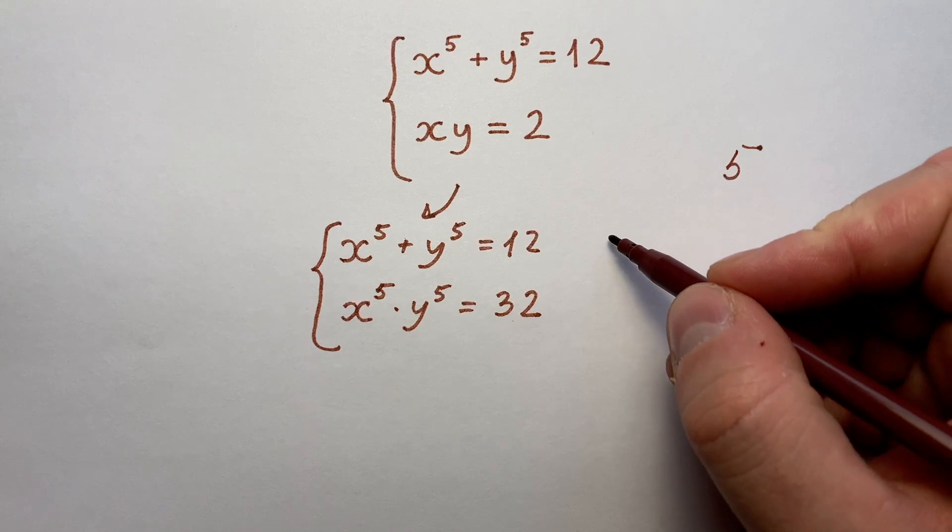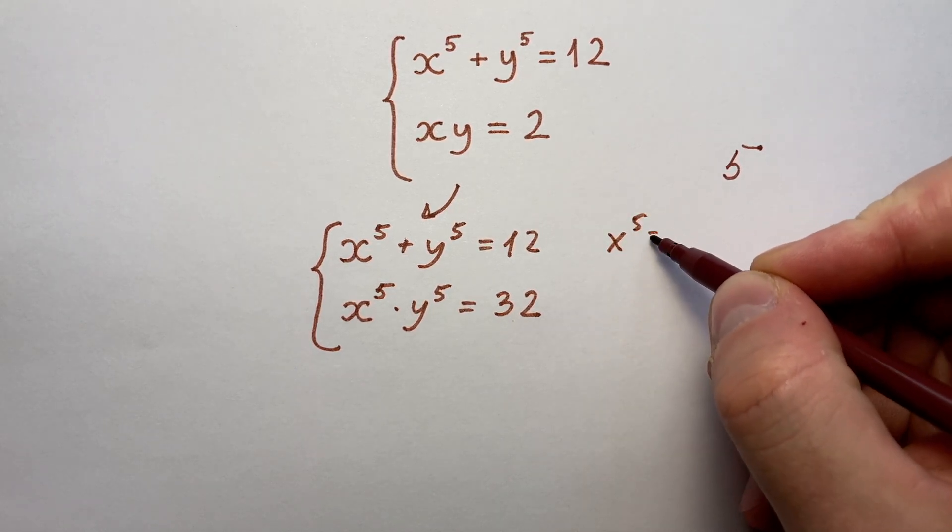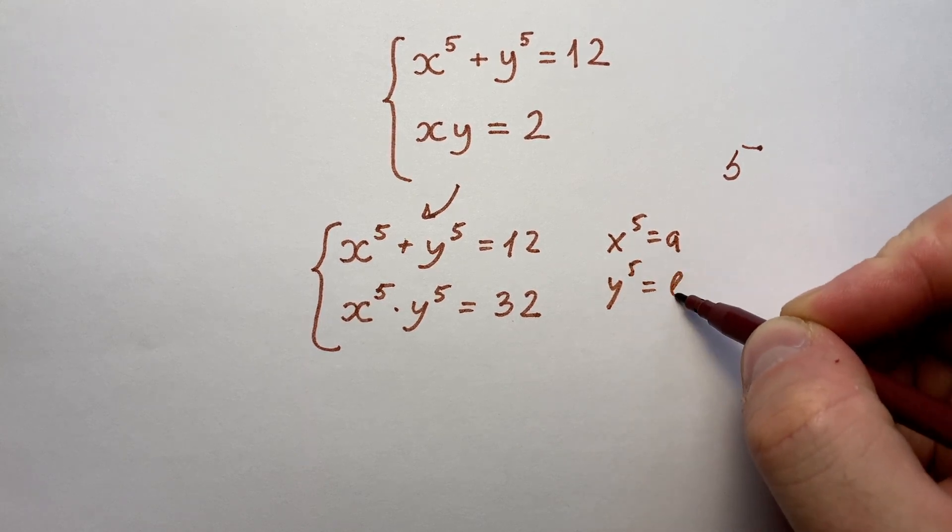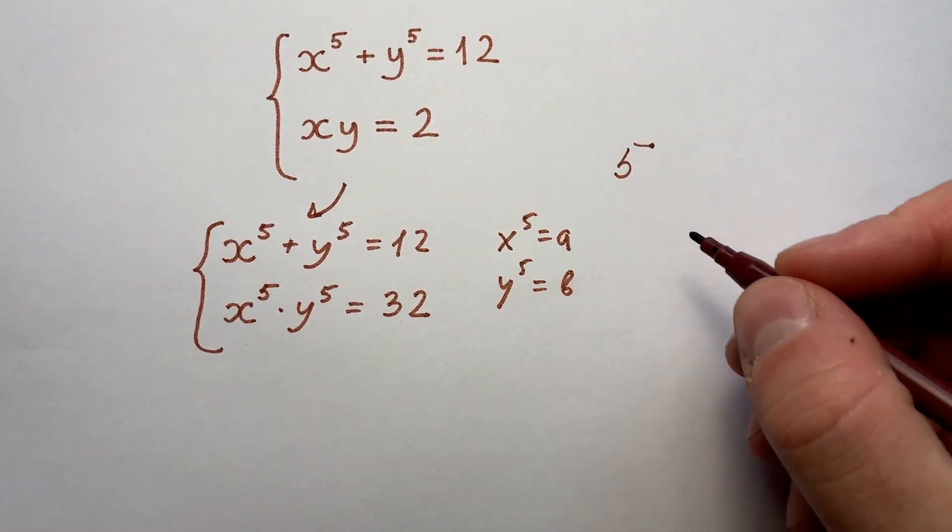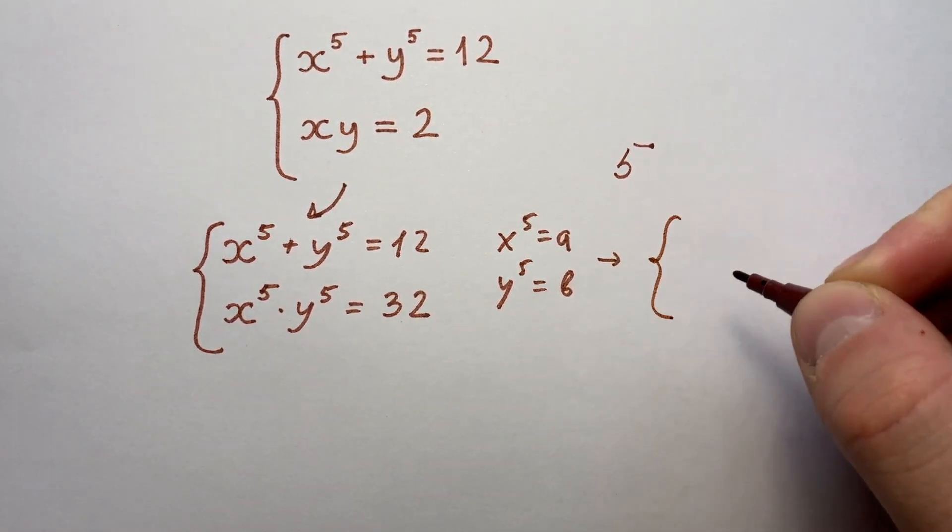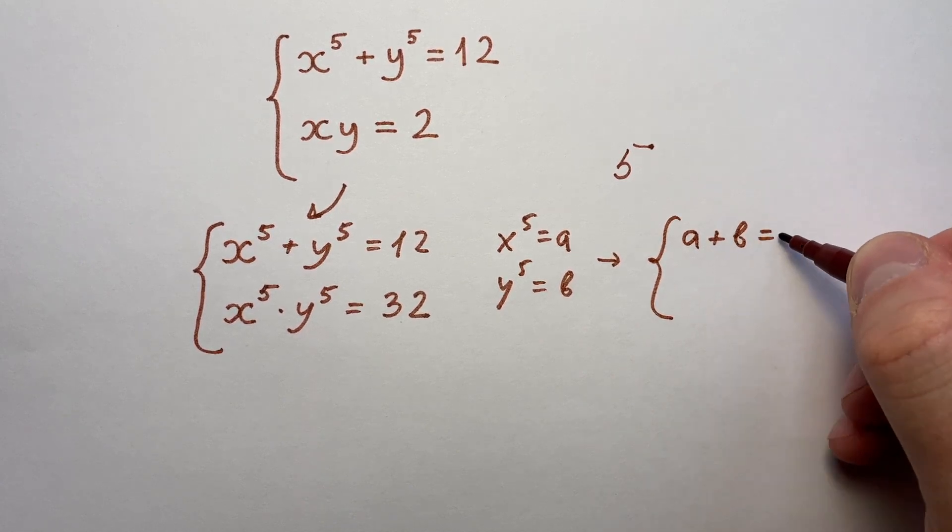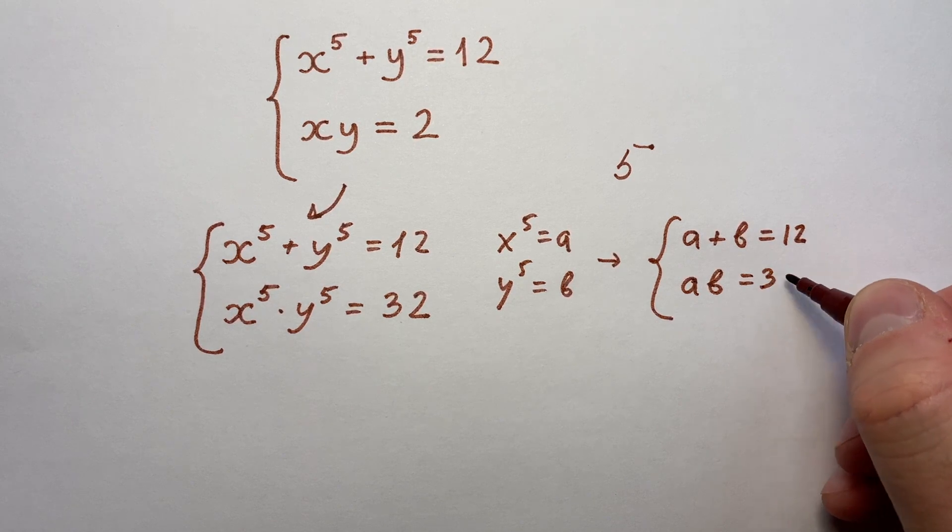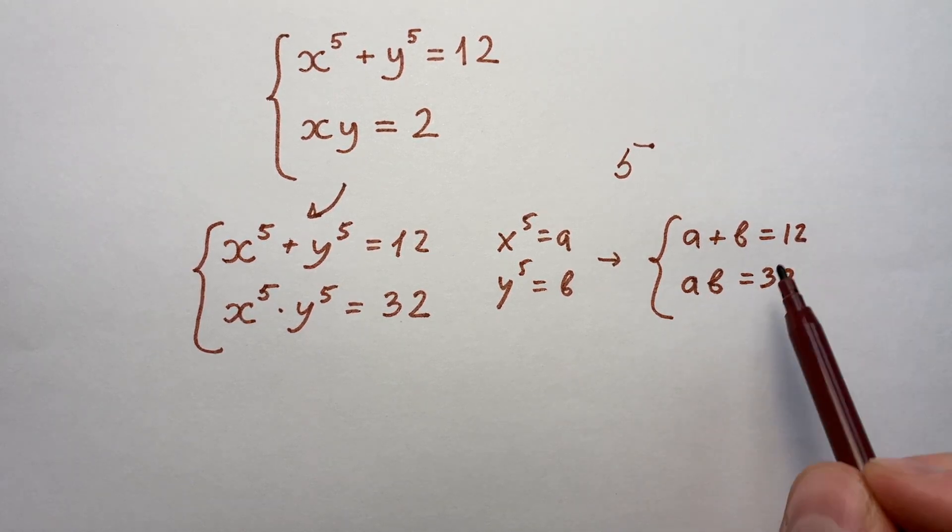Now let's name x to the power of 5 as a and y to the power of 5 as b. We get a system of two very simple equations: a plus b equals 12 and a times b equals 32, and we can solve it in our mind.